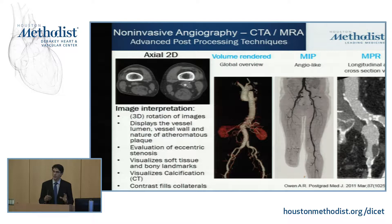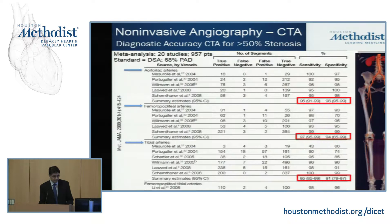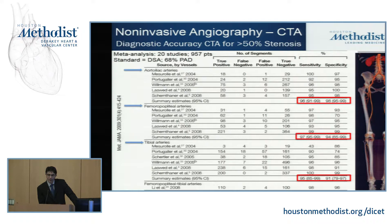How good are these tests? This is data with CTA compared to the gold standard DSA looking for 50% blockage. No matter what arterial bed you're looking at — pelvic circulation, femoral tibial, or tibial circulation — there is extremely high sensitivity and specificity in the high 90s for making the diagnosis versus the gold standard. Incredibly powerful tests.